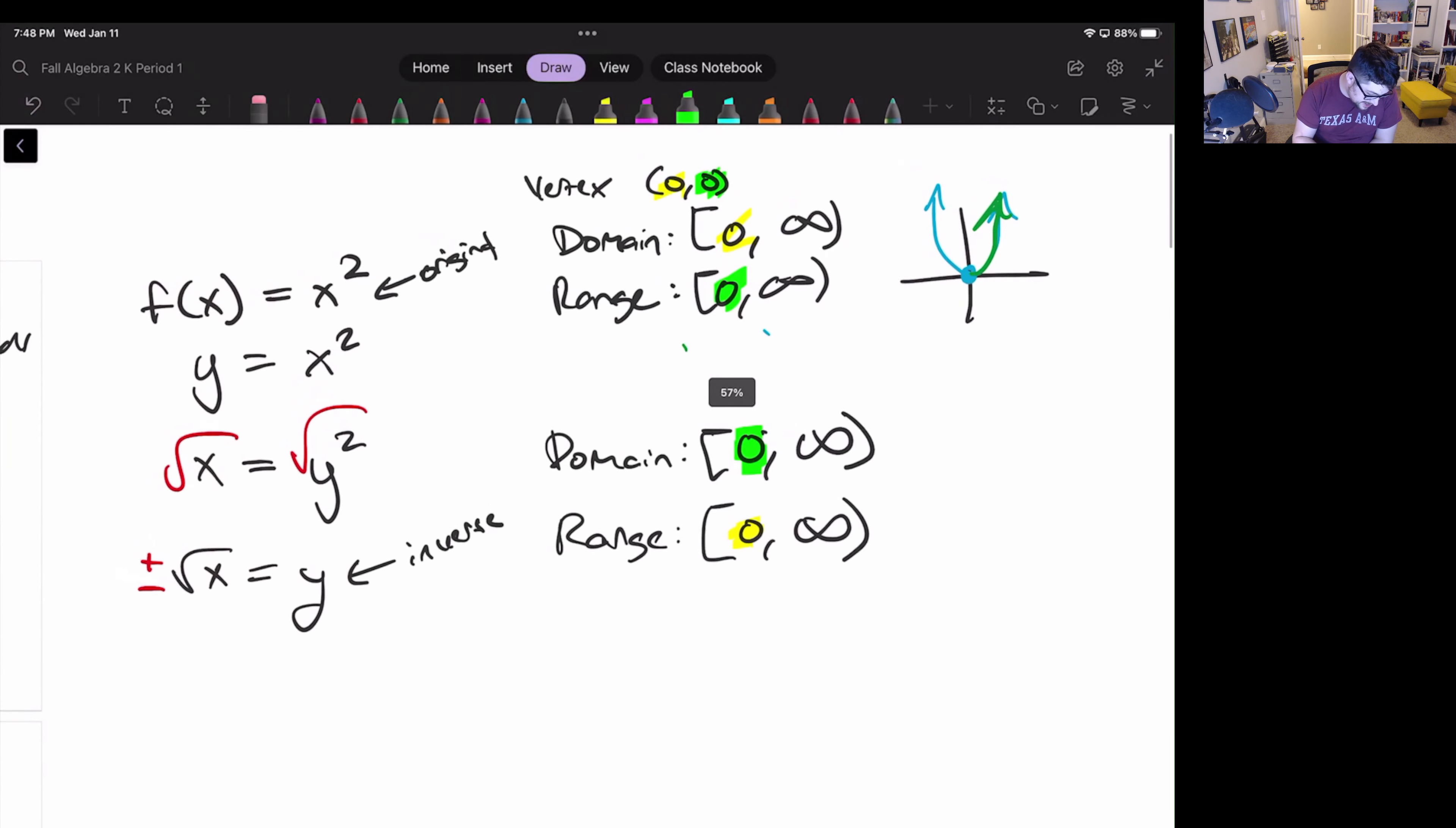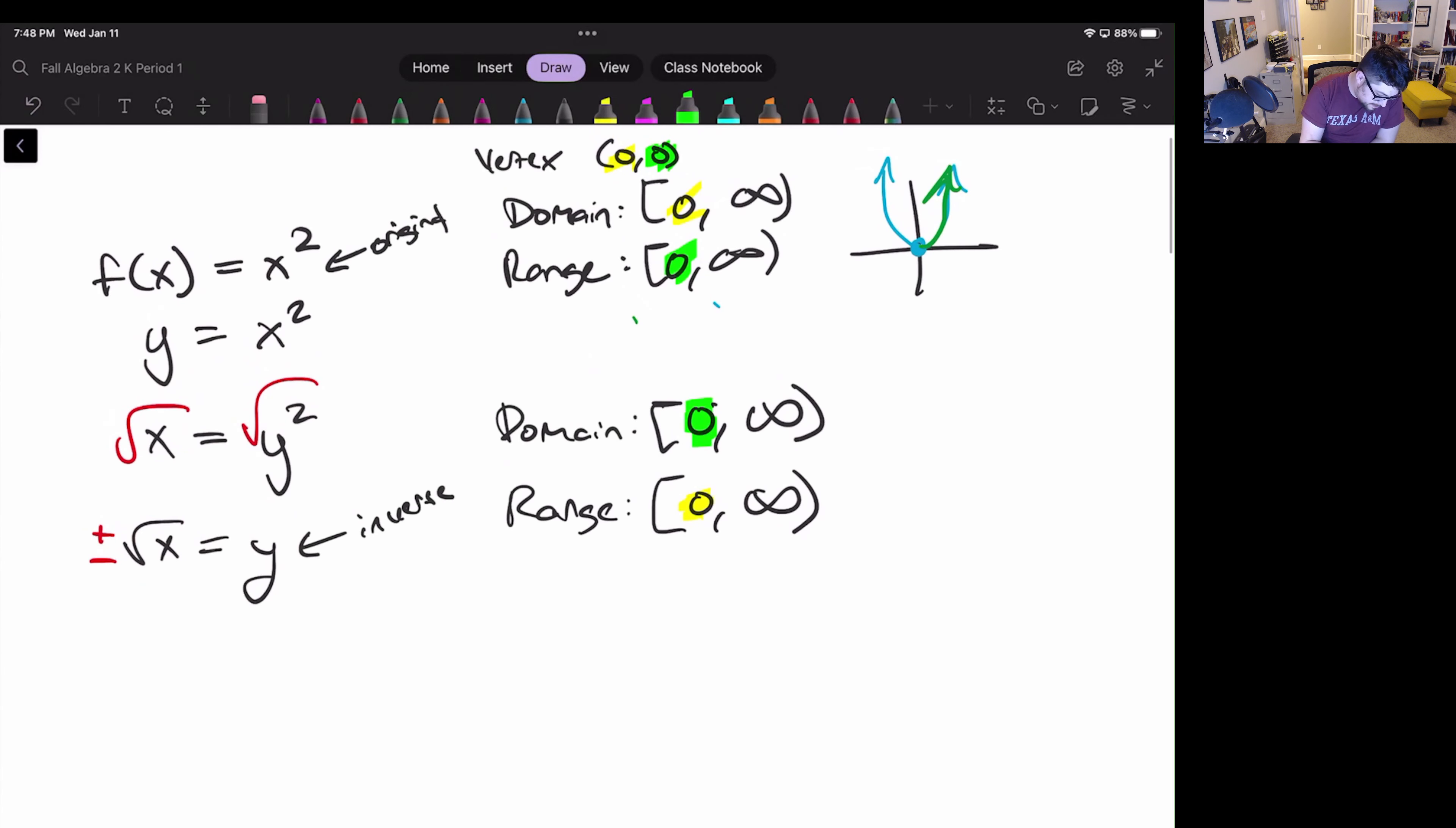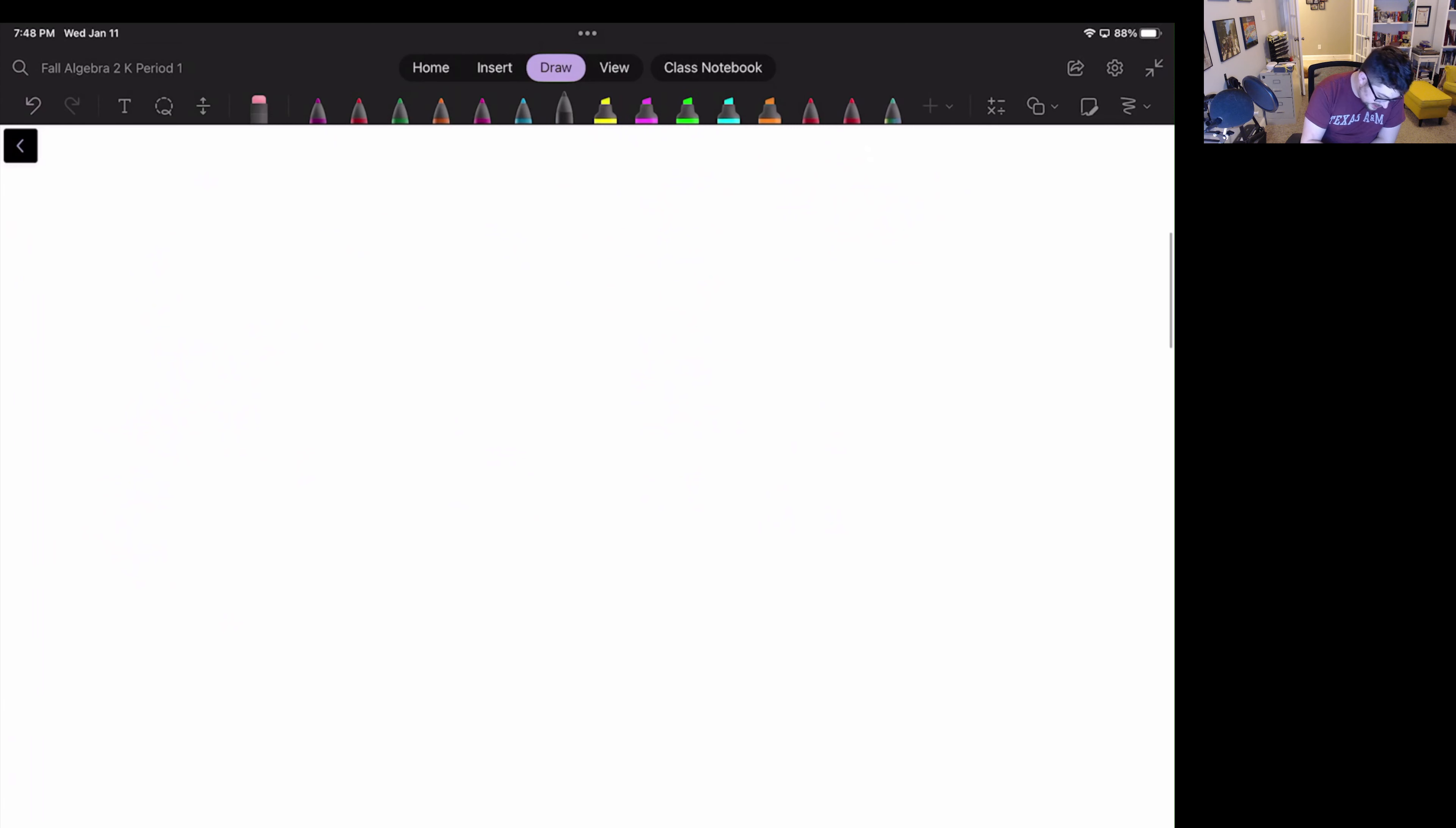Let's try same general idea but let's say that the vertex is now of the original is five comma two. So we now have y equals x minus five squared plus two.